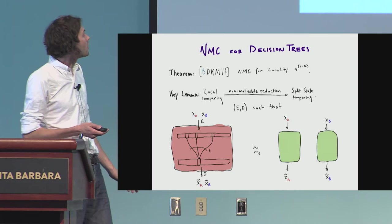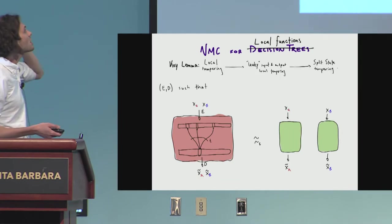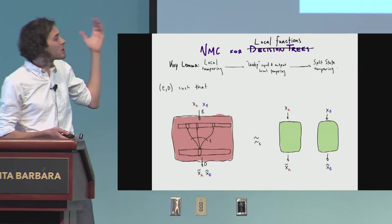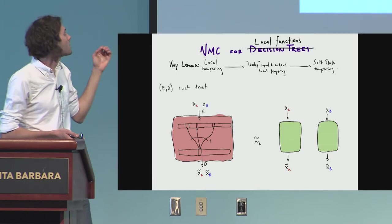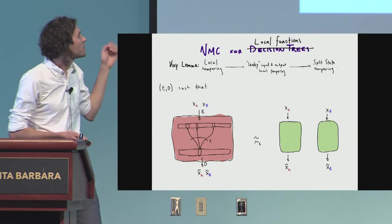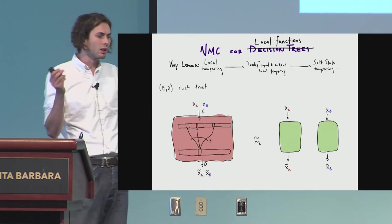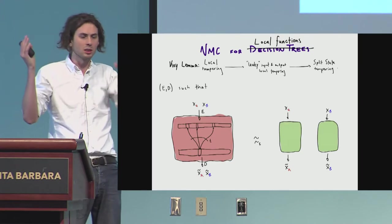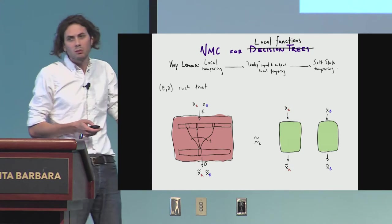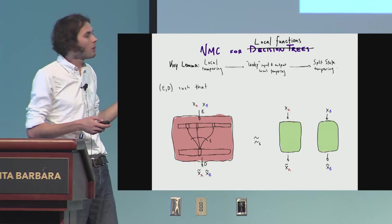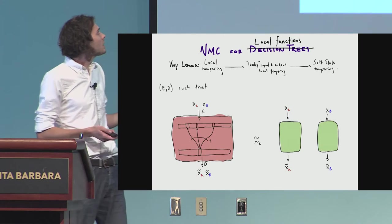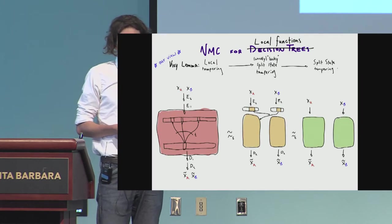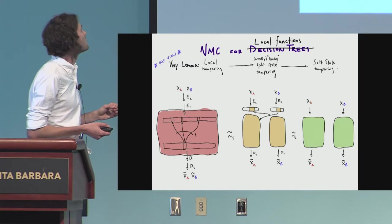This is an example from last year. Subsequent work is a recent paper that has a constant rate, but for our purposes, this is fine. So in this work, we actually constructed, it wasn't a direct reduction initially. It was this two-piece reduction. We reduced from local tampering to leaky input-output local, where we had this dependence graph for local function. It doesn't really matter.